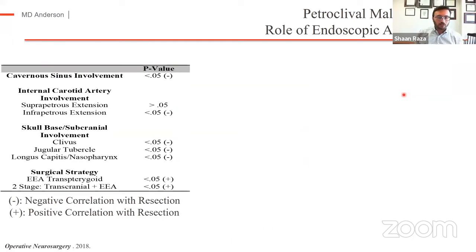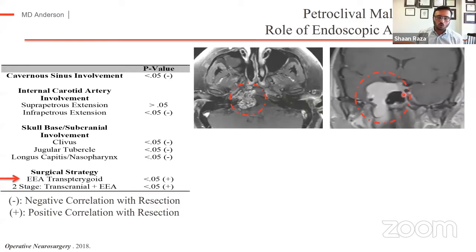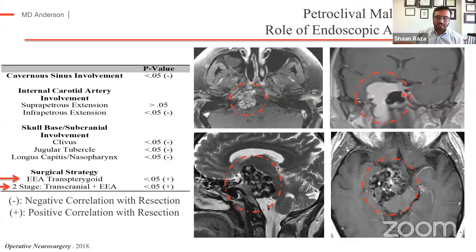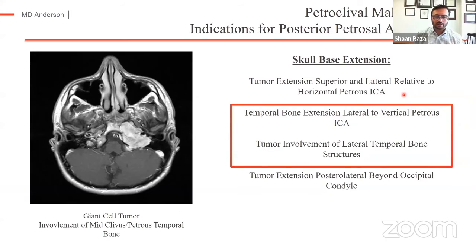When we look at our outcomes, using the endoscopic transteregoid approach as the workhorse and then for selective extensions adding a lateral skull base approach has significantly improved resection outcomes and significantly decreased our neurologic complication rate. This has become one of the workhorses in our toolbox for managing petroclival pathology. However, the point of this session is that you can't be too dogmatic about when to use a single approach. There are particular patterns of skull base or subdural extension where I start thinking about doing either a posterior petrosal or combined petrosal approach.